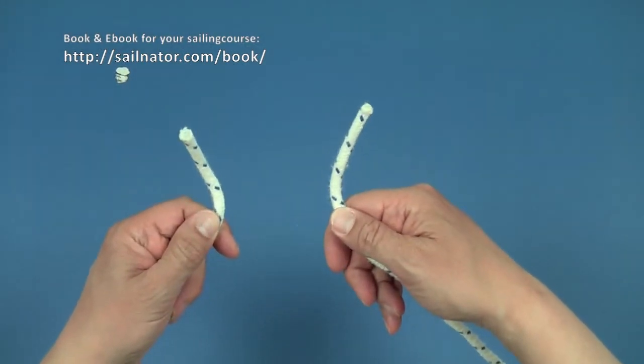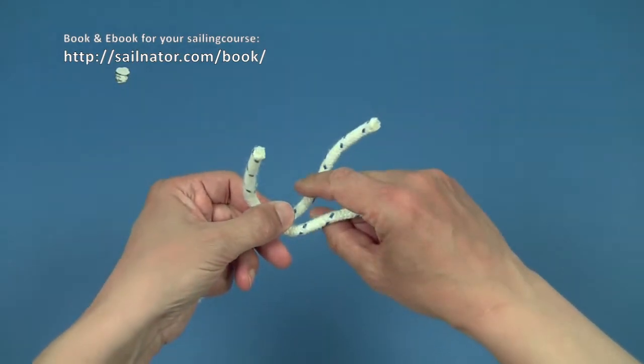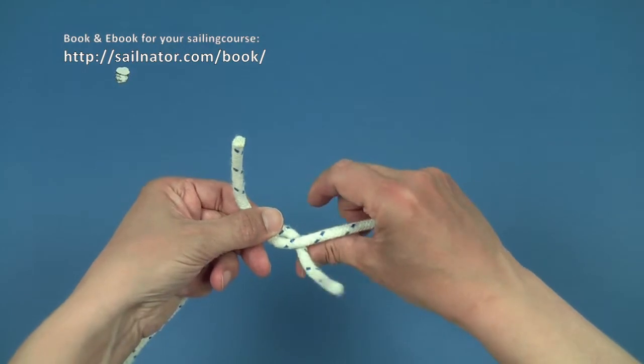I start in the same way as I would when tying a ribbon. I take both ends of the lines one above the other and pull through one end underneath the other.